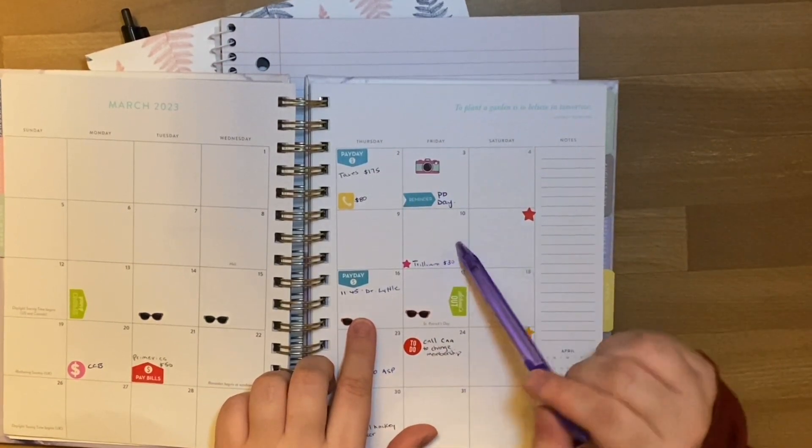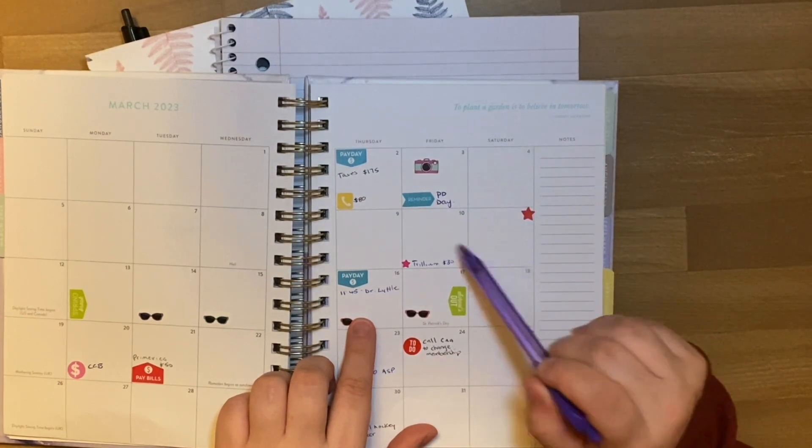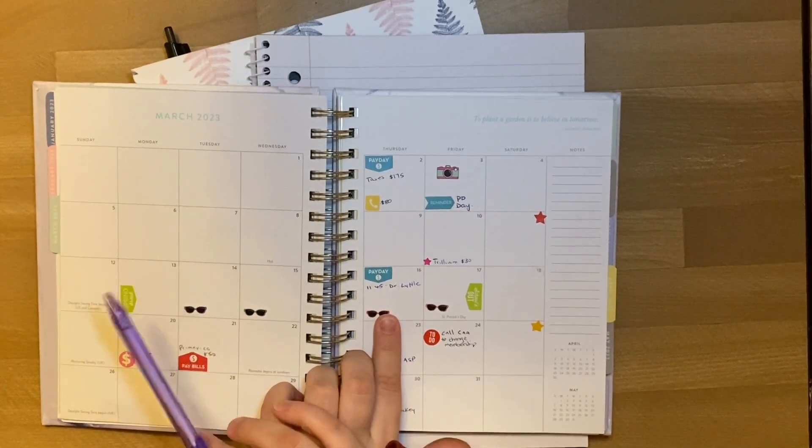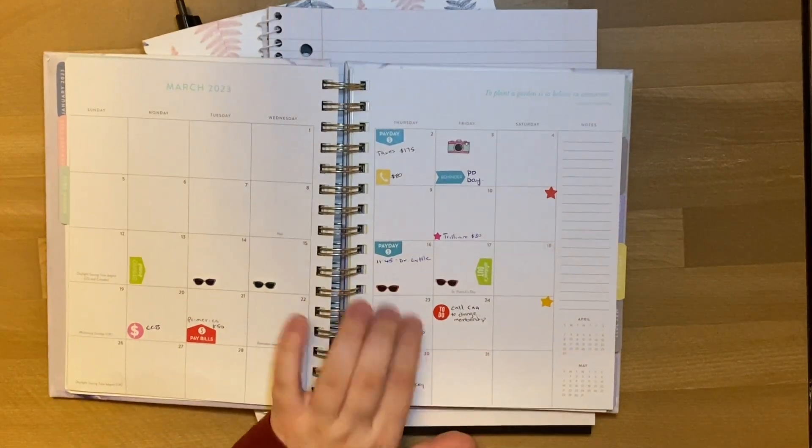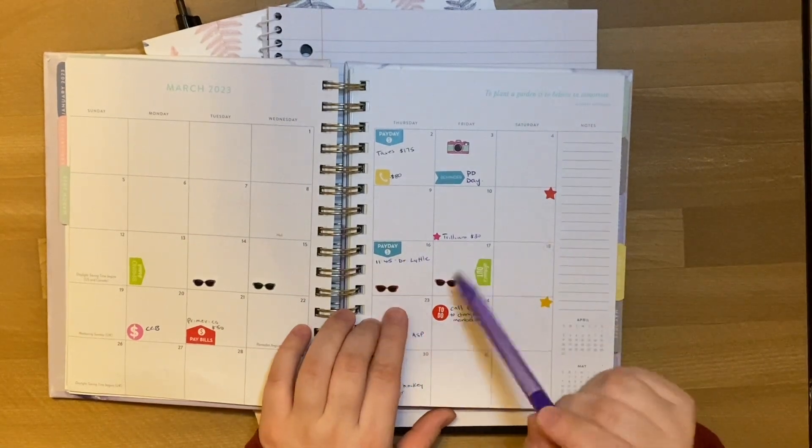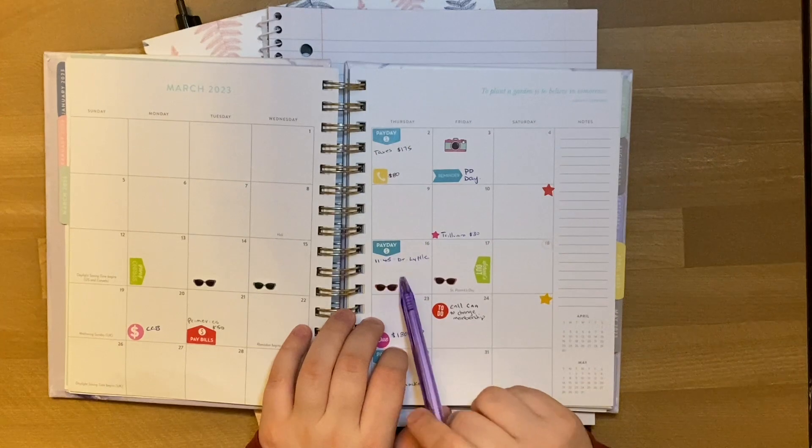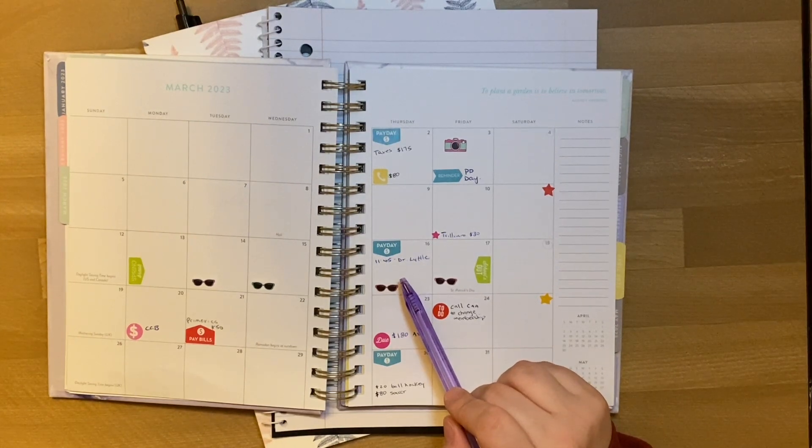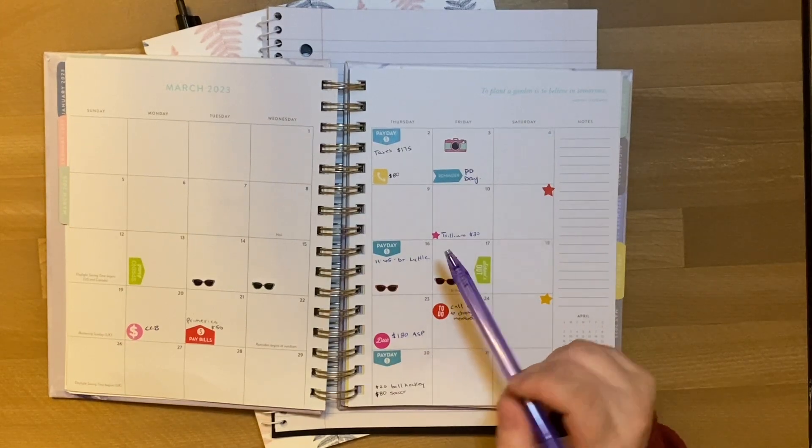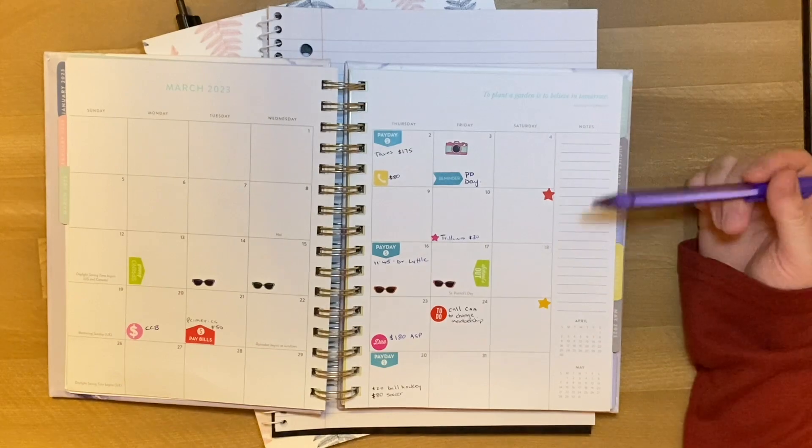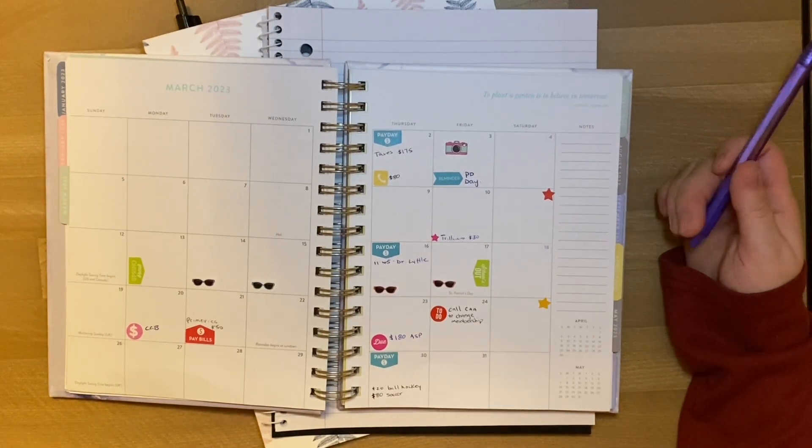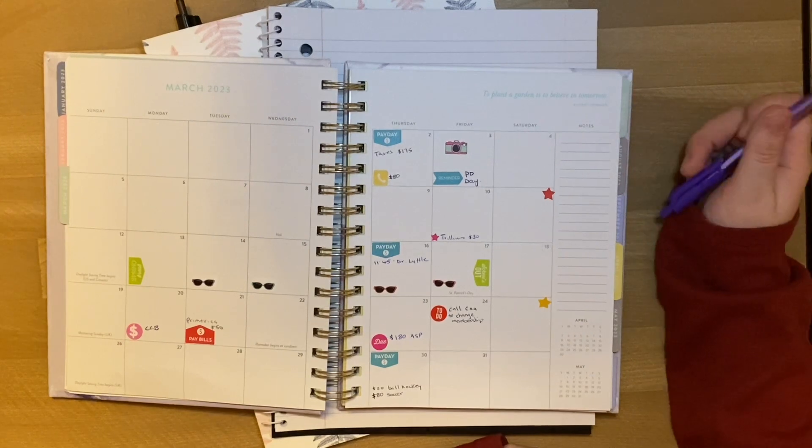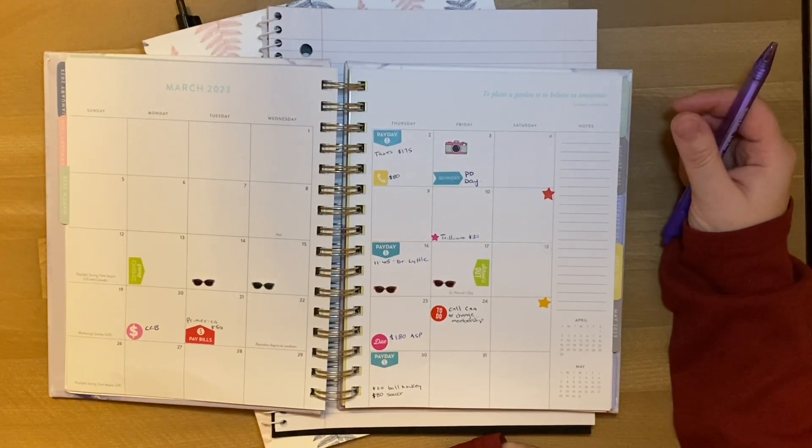First step to creating a budget is to know what your expenses are. So between tomorrow, the second and the 16th, I do have a day off on the Friday. My phone bill, which is not actually $80, it's actually $90, comes out tomorrow. My income taxes are going to cost $175. I'm going to go pay those tomorrow as soon as I'm done work. On the 10th, I get $30 from the Trillium benefit. I am actually off this entire week. It's March break for our kids from the 13th to the 17th. So I booked that week off as well so that I could be home with my son and not have to pay for childcare.